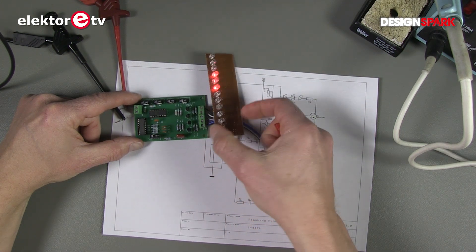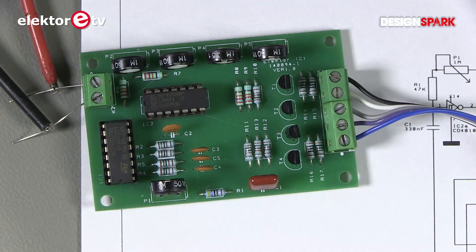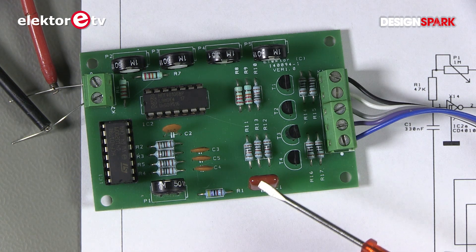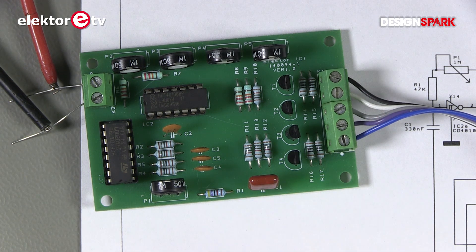If you do not like the speeds of this thing it's easy to change. You just change the value of this capacitor. And you can make it run faster or slower.